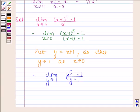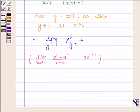By the key idea, we know that limit x tends to a, x^n minus a^n upon x minus a is equal to n times a to the power n minus 1. Now, here, in place of x, we have x+1. In place of n, we have 5 and in place of a, we have 1.